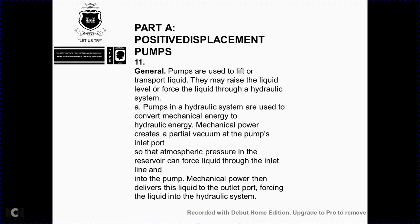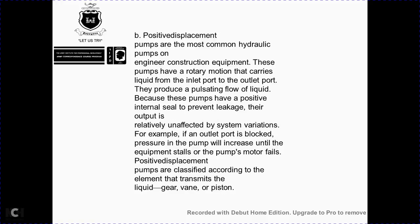Part A: Positive Displacement Pumps — General. Pumps are used to transport liquid required to flow through the hydraulic system. Hydraulic pumps convert mechanical energy to hydraulic energy. The pump creates a partial vacuum at the inlet port so that atmospheric pressure forces liquid through the inlet line into the pump, then delivers the liquid out the outlet port into the hydraulic system. The positive displacement pump is the most common hydraulic pump on engineering construction equipment. These pumps use rotary motion to carry liquid from inlet to outlet port, producing a continuous flow. Positive displacement pumps are classified by the type of element that transmits liquid: gear, vane, or piston.